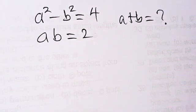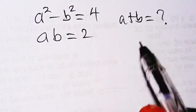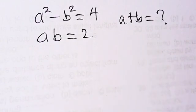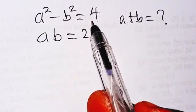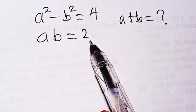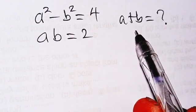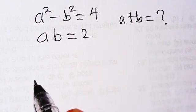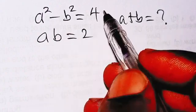Hello, good viewers, welcome! In today's tutorial we are going to be solving this beautiful Olympiad problem. We are given a squared minus b squared equals 4, and ab equals 2. So what will be the value of a plus b? Now let's see what we are going to do.